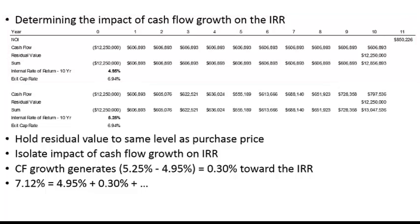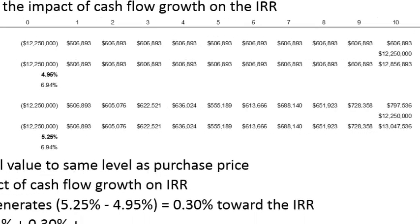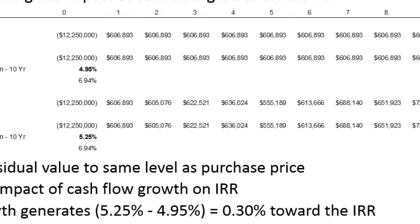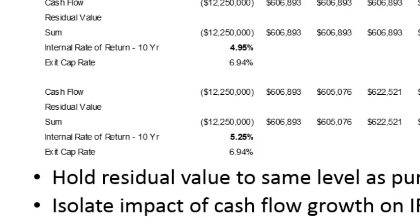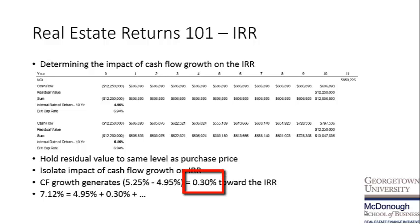To determine the impact of cash flow growth, we again acquire the asset for $12.25 million and hold the residual value static at $12.25 million — so there's no influence from a change in residual value. But we now allow individual cash flows to fluctuate each year as per the underwriting. This results in an IRR of 5.25%, meaning the change in cash flow as underwritten over the 10-year hold results in a 30 basis point increase in the IRR. So 5.25% of the 7.12% comes from the cash flow component.